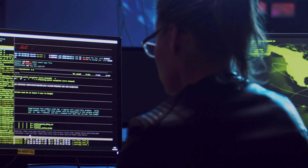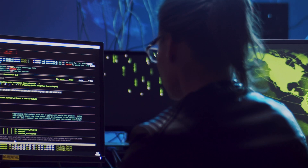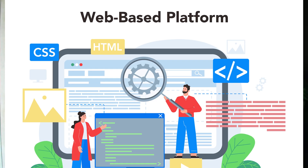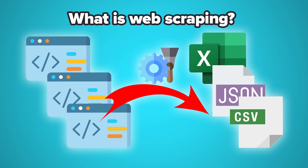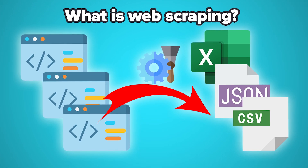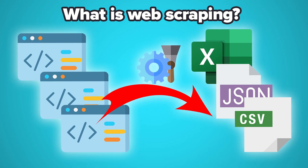Web scraping is defined as the automated process of gathering data from a target website. It's a verb — you go out and scrape something — using your software to go to a site, get that data, and bring it in. There are so many use cases far and wide that are common in the world today, and we as consumers are using scraped data every single day that we're online.